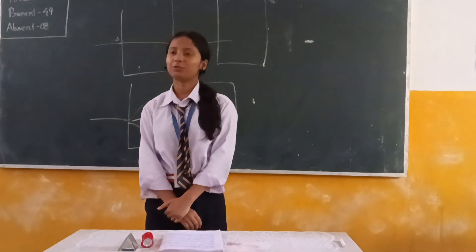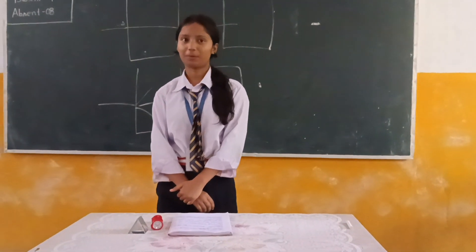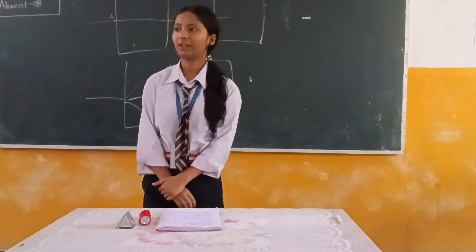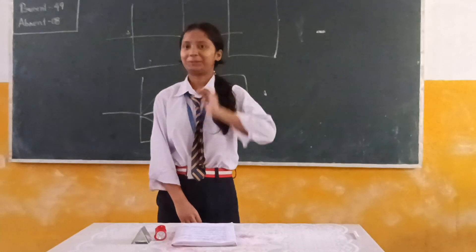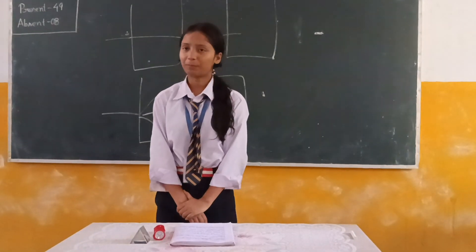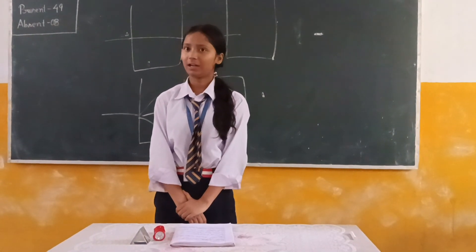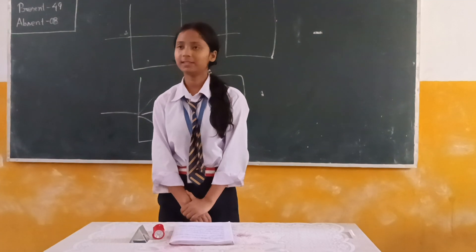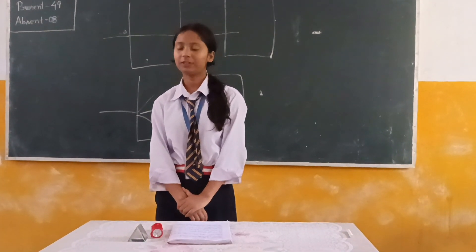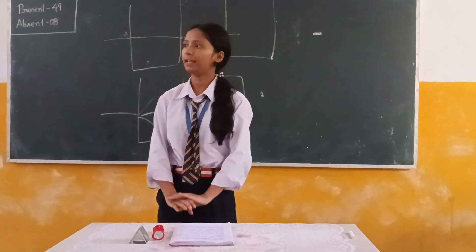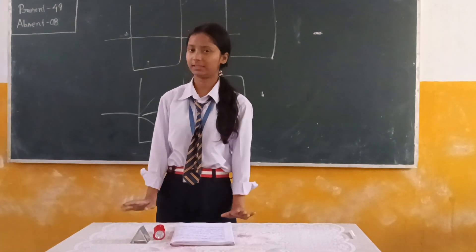My name is Kashmita and today I am here to discuss about the topic of dispersion of light. The splitting up of white light into many colors is called dispersion of light. The white light consists of seven colors and all the seven colors have different wavelengths.